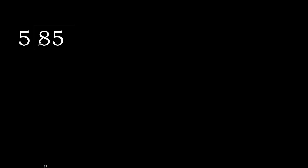85 divided by 5. With 8: 5 multiplied by which number is nearest to 8 but not greater? 5 multiplied by 2 is greater. 5 multiplied by 1 is 5 — not greater. 8 minus 5 is 3.